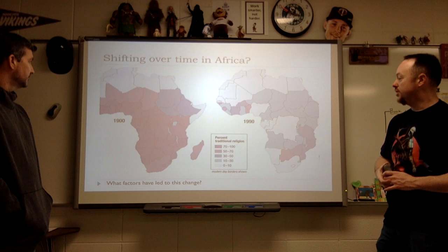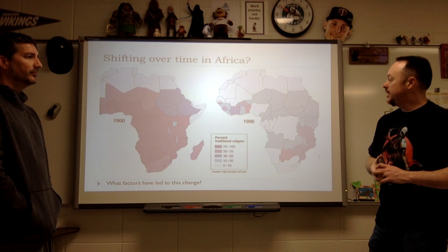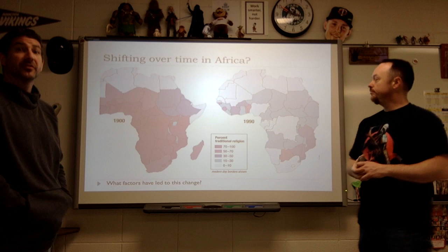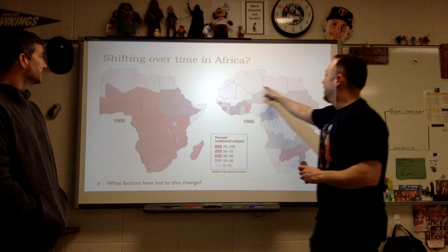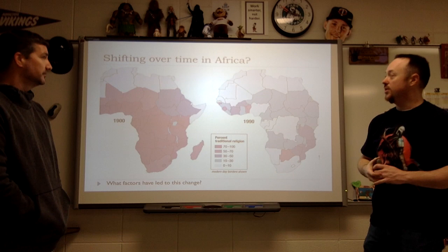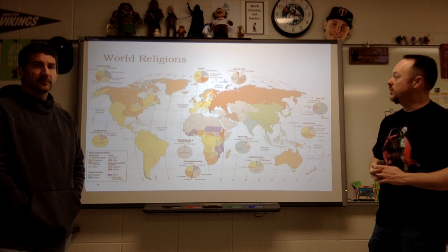Looking at shifting times in Africa: you can see traditional religion in 1900, and then we start to get into even more colonialism. We see much less traditional religion present by 1990. Keep in mind that universalizing religions recruit — they send out missionaries and spread their religion. You can see that effect from 1900 to 1990 in that same area. That's the Muslim world — Islam had already gotten there by 1900.